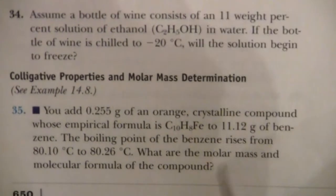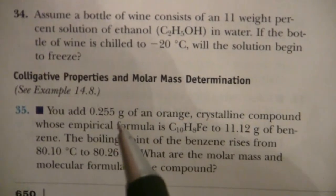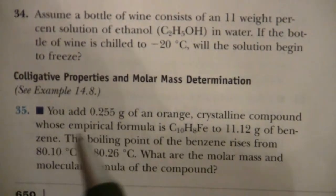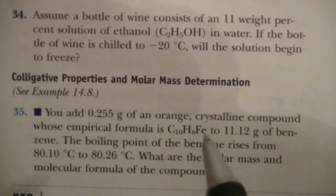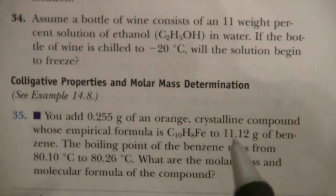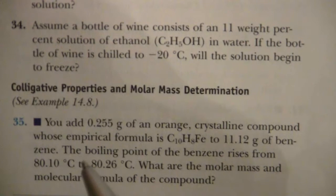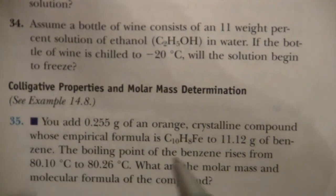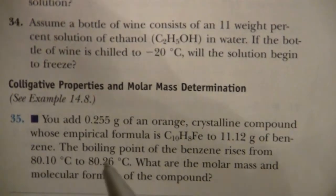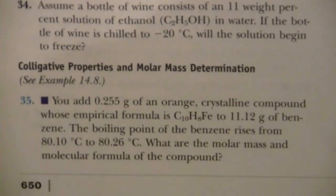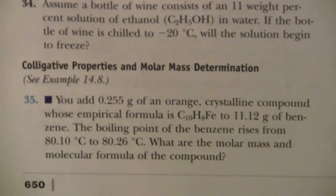This problem says you add 0.255 grams of an orange crystalline compound whose empirical formula is C10H8Fe to 11.2 grams of benzene and the boiling point of the benzene rises from 80.10°C to 80.26°C. What are the molar mass and molecular formula of the compound?